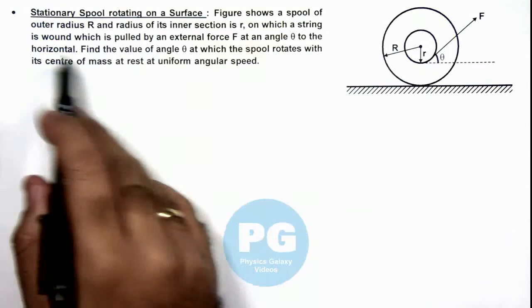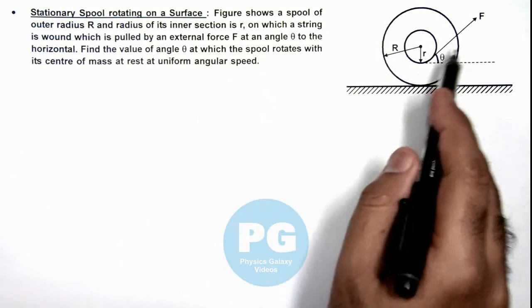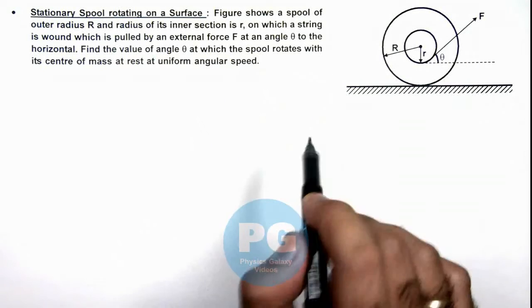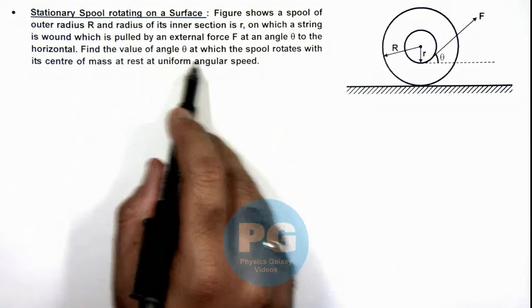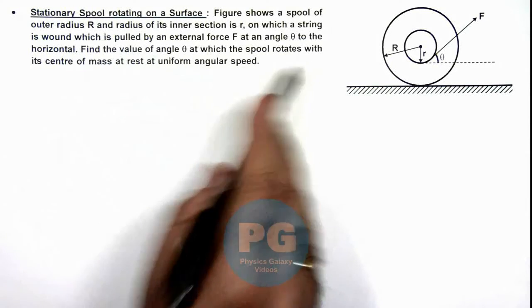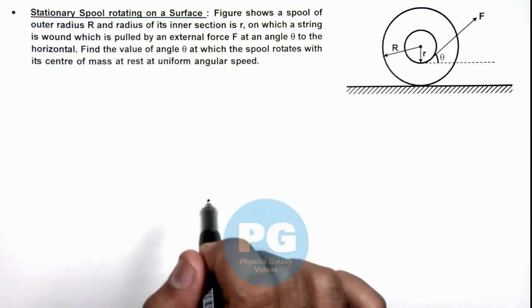On which a string is wound which is pulled by an external force F at an angle theta to the horizontal. Here we are required to find the value of angle theta at which the spool rotates with its center of mass at rest at uniform angular speed.